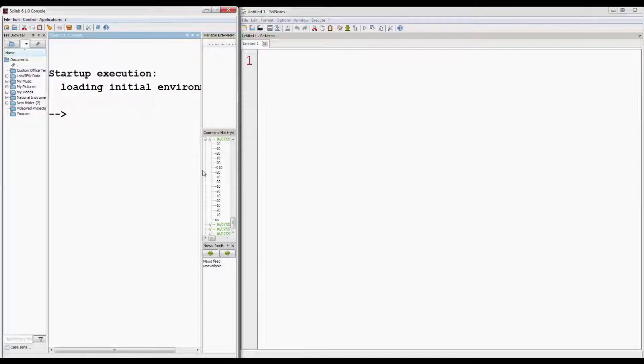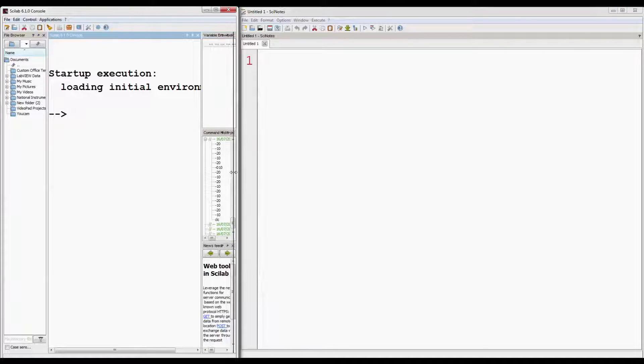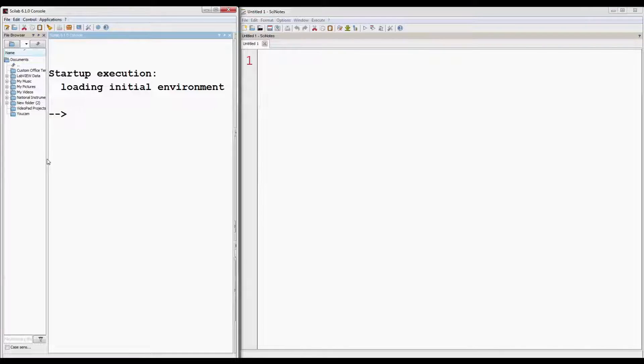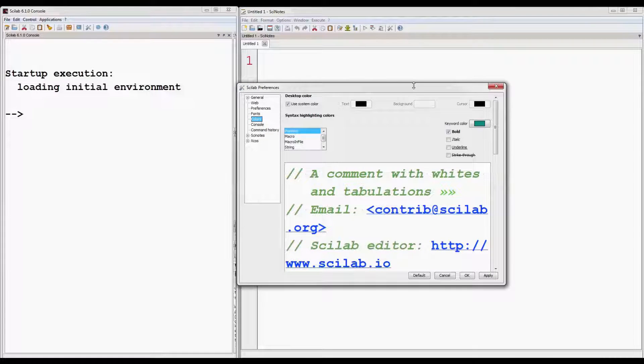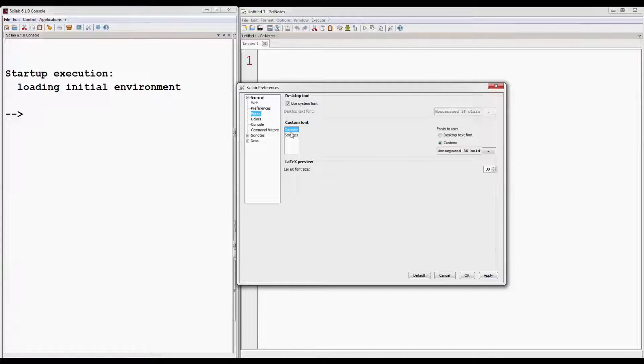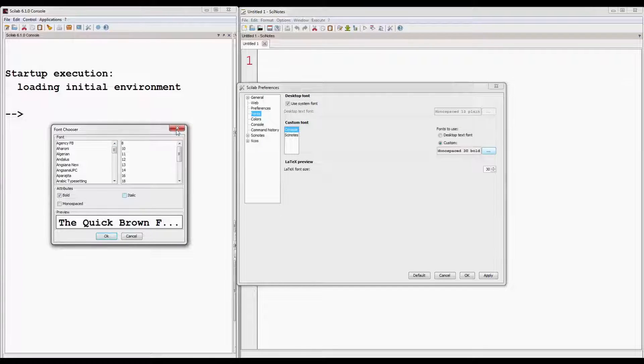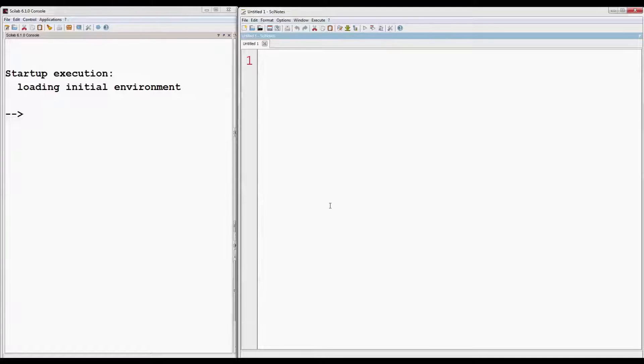Before starting the program, I want to mention that default color of the variables, strings, numbers, etc. that we are going to write in the Scionotes window have been changed for better contrast. You can do the same. Select options, preferences, then set colors. Here you can select different items from this menu. Like we have selected a string and change its color. You can also change the font size of the console and Scionotes window from here. Let's start now.